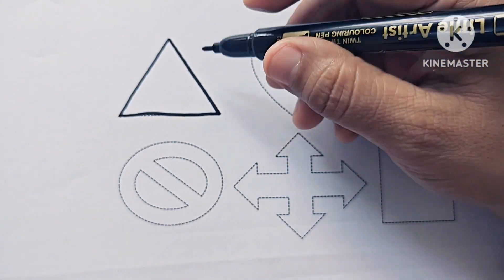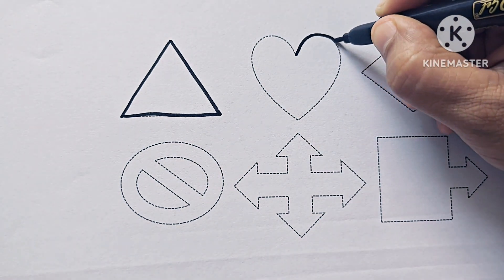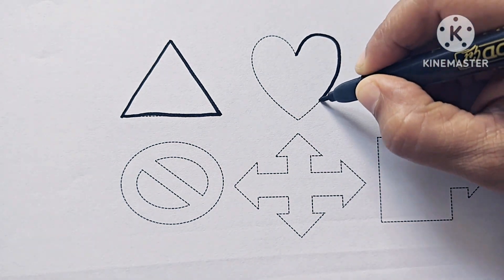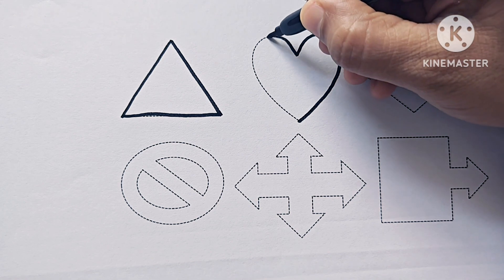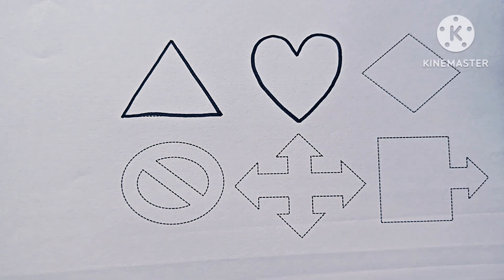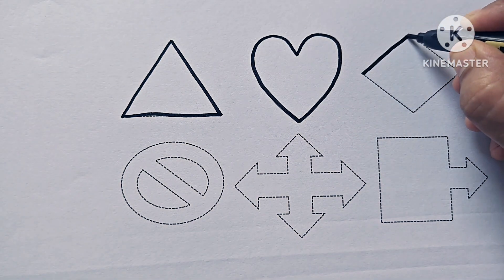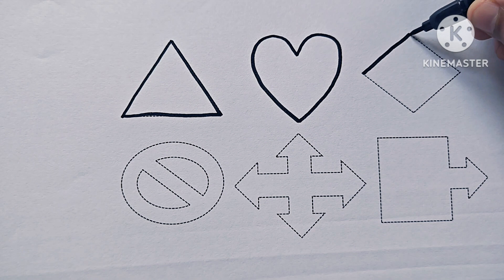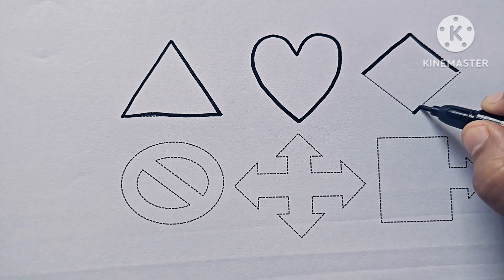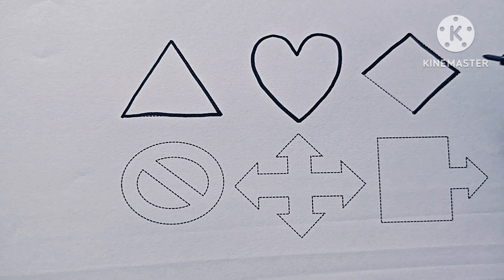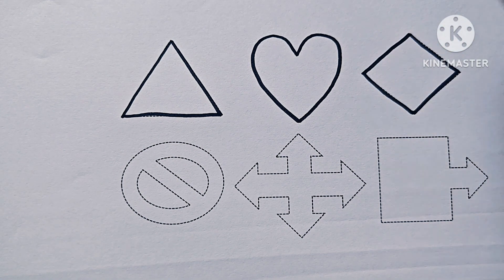This is a heart. This shape is a heart. This is a rhombus. It is also known as diamond.